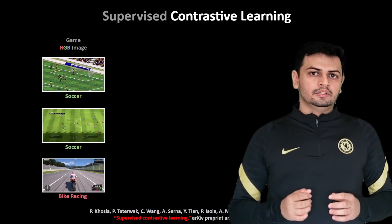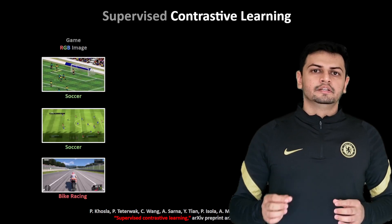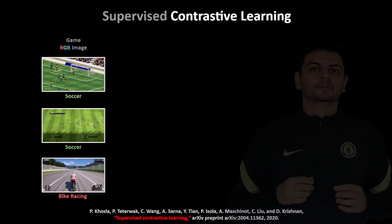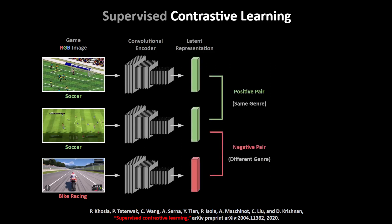Note that the two soccer images come from two different games with different visual stylings. We pass these images through a neural network encoder that we wish to train and obtain the latent representations. In this framework, the two soccer games are defined as a positive pair as they belong to the same game genre, while the soccer and bike racing games are defined as a negative pair as they belong to different genres.